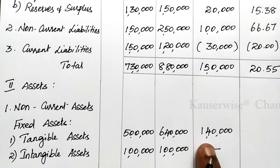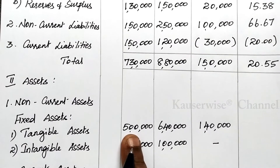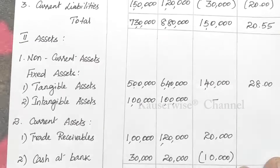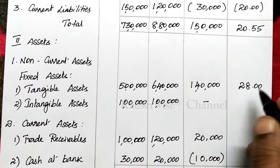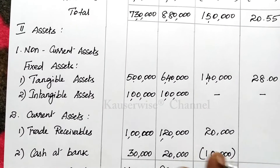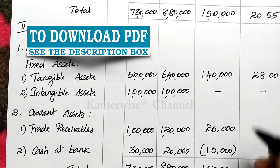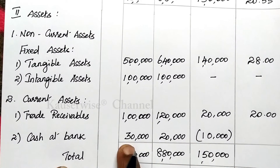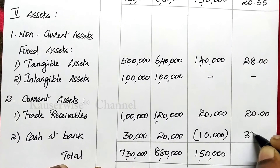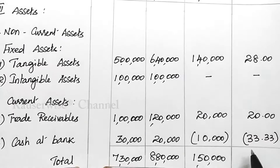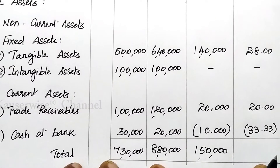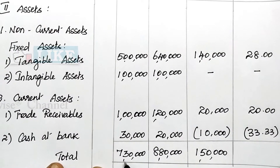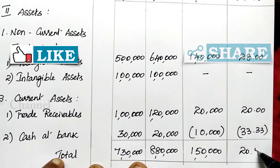For assets — tangible assets: 1,40,000 divided by 5,00,000 into 100 = 28%. Intangible assets: no change, put a dash. Trade receivables: 20,000 divided by 1,00,000 into 100 = 20%. Cash at bank: minus 10,000 divided by 30,000 into 100 = minus 33.33%, entered within brackets. Total assets: 1,50,000 divided by 7,30,000 into 100 = 20.55%.